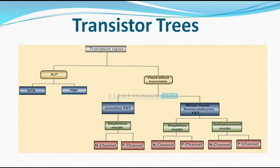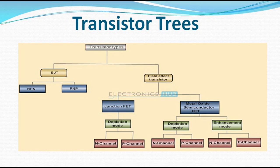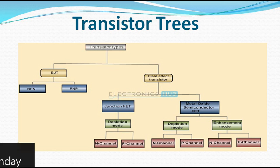This particular diagram is the transistor tree. The transistor tree is just a summary of what we will be discussing in much more detail. Remember I told you we will also be discussing small signal transistors, power transistors and so on. This transistor tree comprises all the transistors we will be discussing in detail. For transistor types, just as I said before, we have BJT and FET. In BJT it has NPN and PNP.